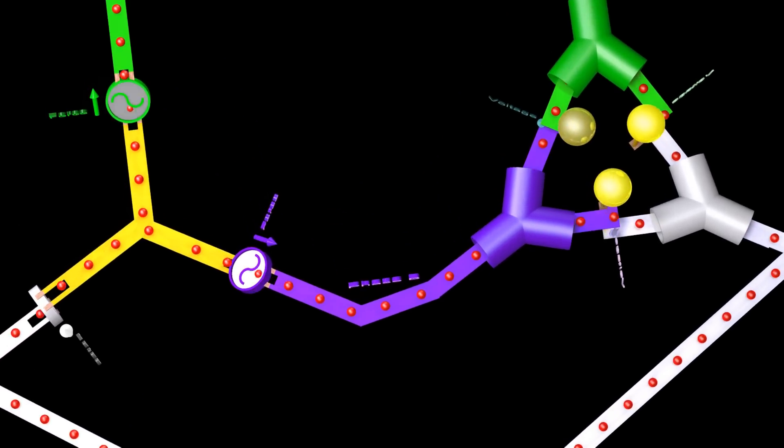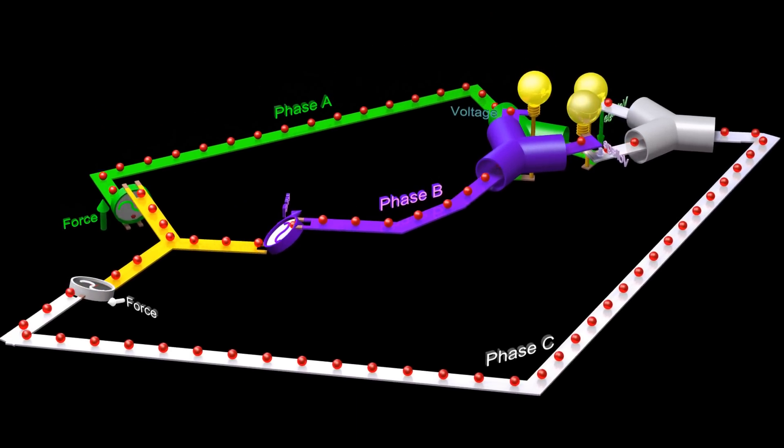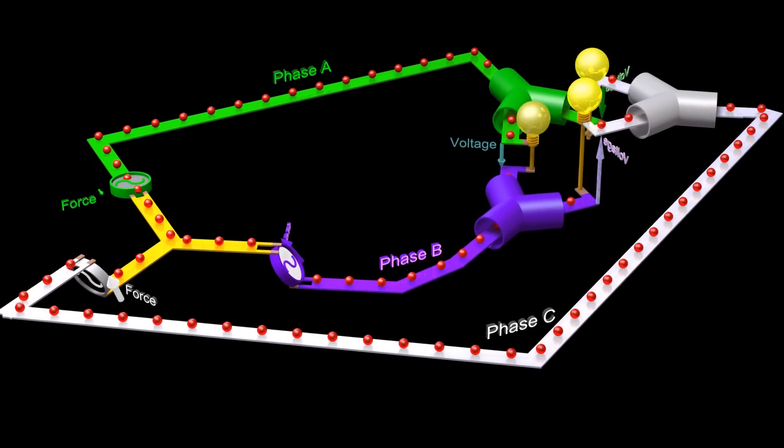The voltages across the lightbulbs are now larger than before, because the line to line voltages are larger than the line to neutral voltages.